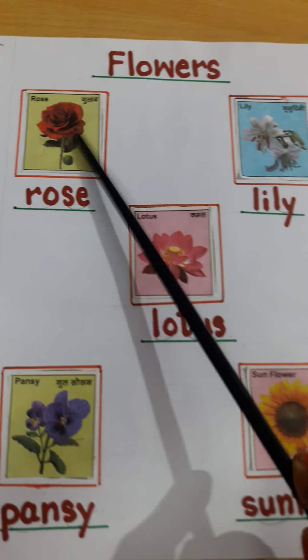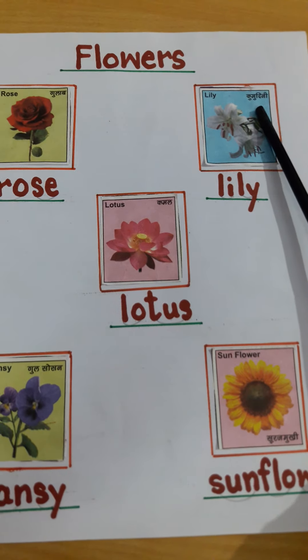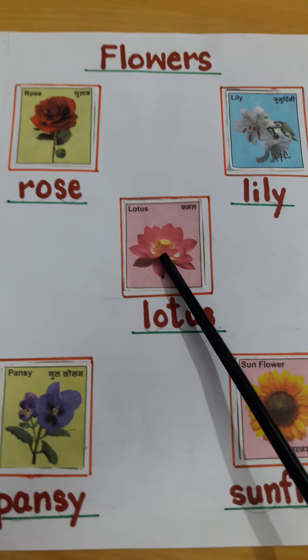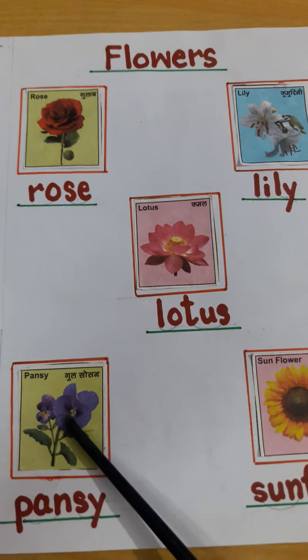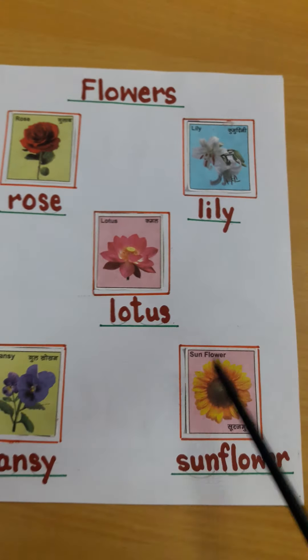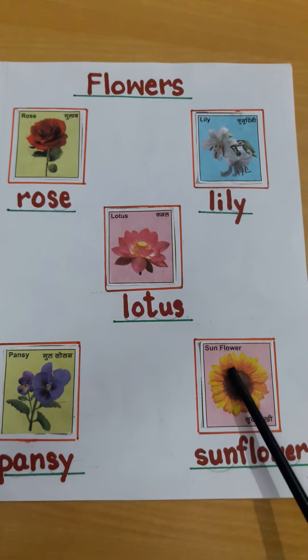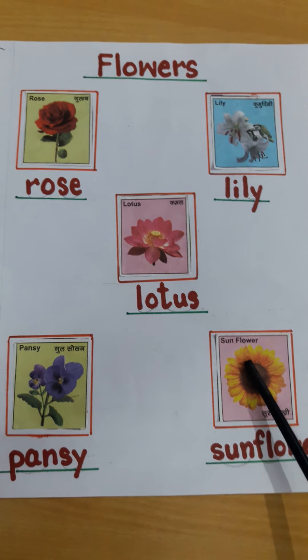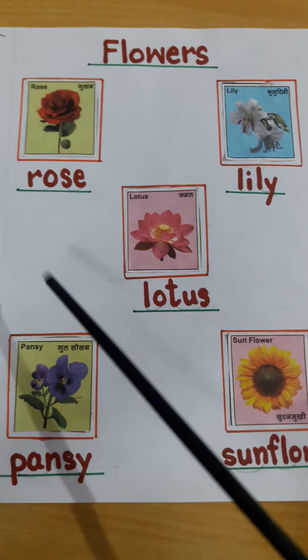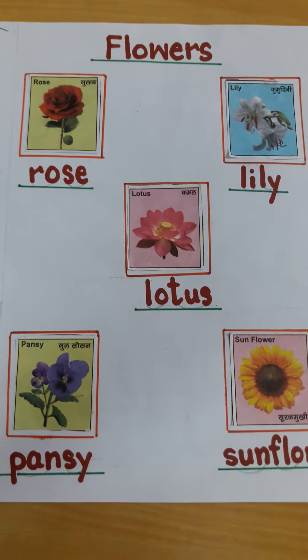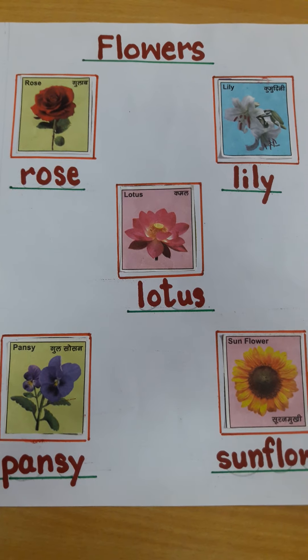Rose, Lily, Lotus, Pansy, Sunflower. You learned all the names with their spelling. Okay.